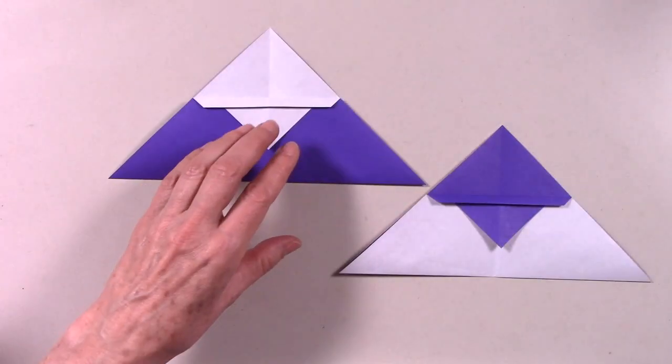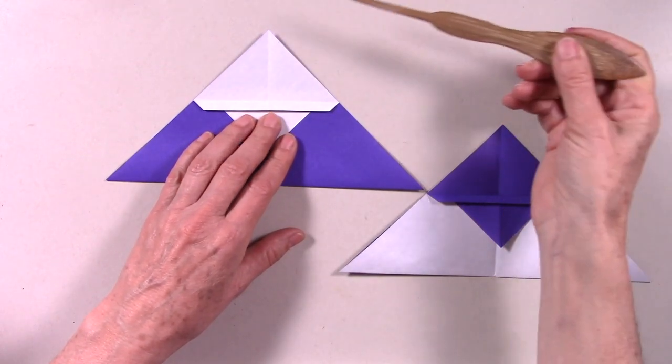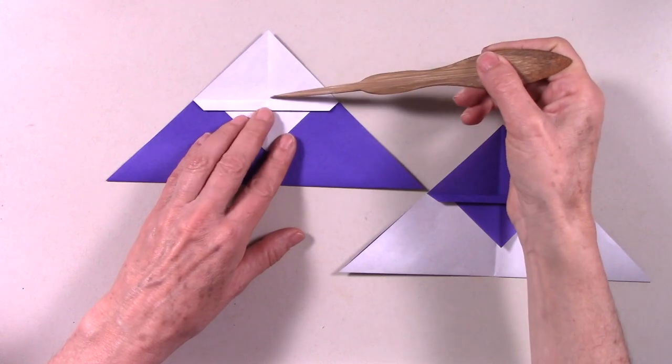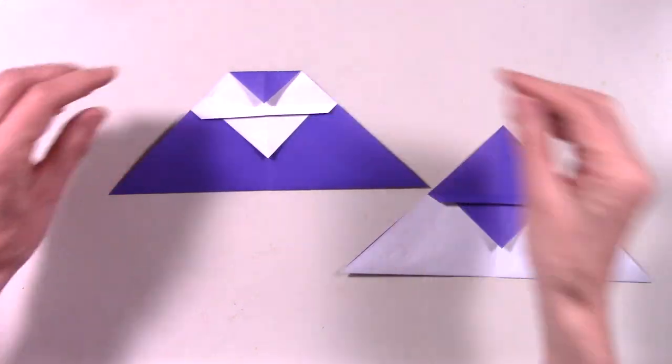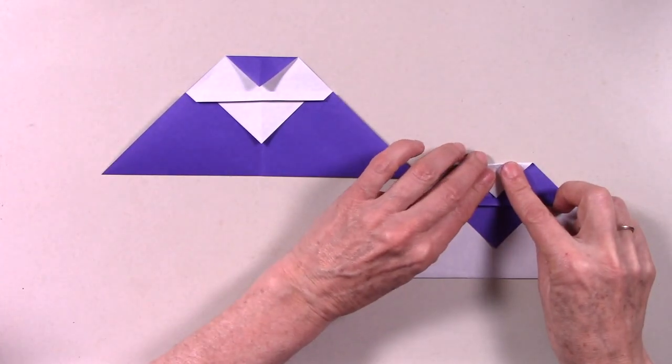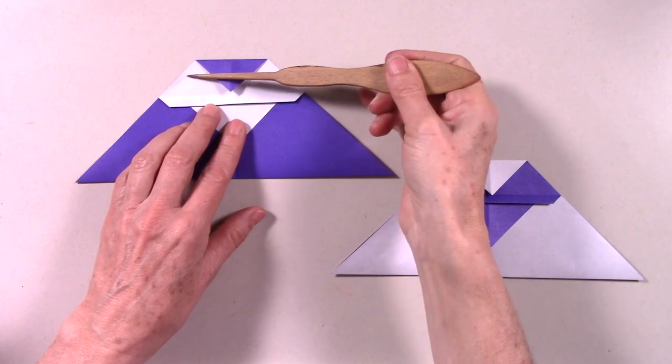We are going to be making a fold about here, another horizontal valley fold by bringing this point to touch this edge. Now we make another valley fold along here.